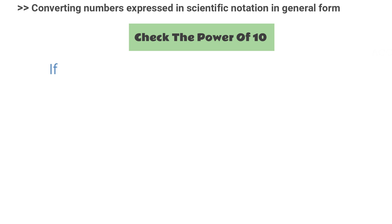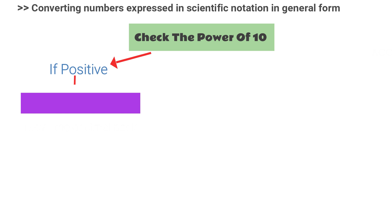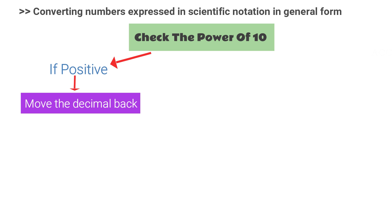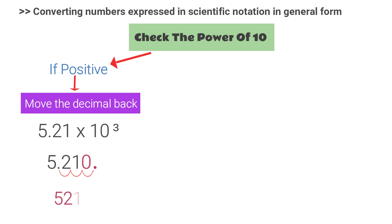Now let's see how to convert numbers expressed in scientific notation to general form. All you need to do is check the power of ten. If the power is positive, we have to move the decimal point back the same number of positions as the index. Look at this example: five point two one into ten to the power three. Three is positive, so we go back three times — that becomes five thousand two hundred and ten.